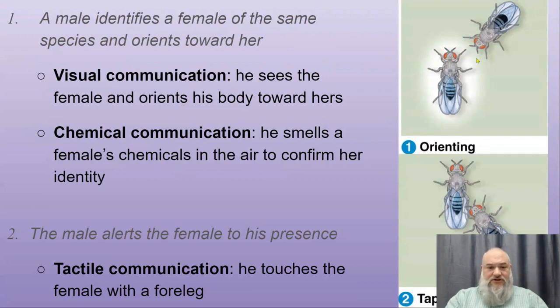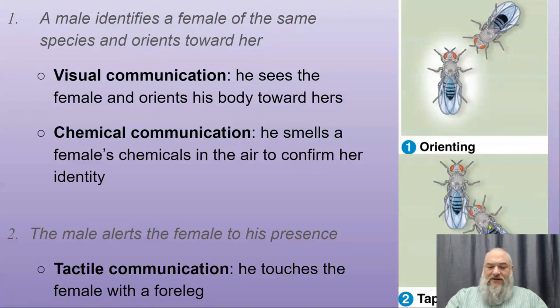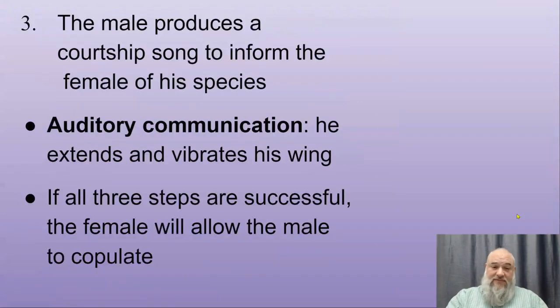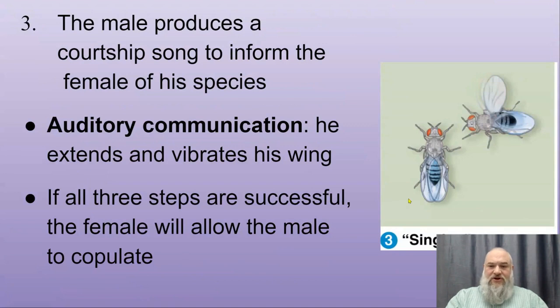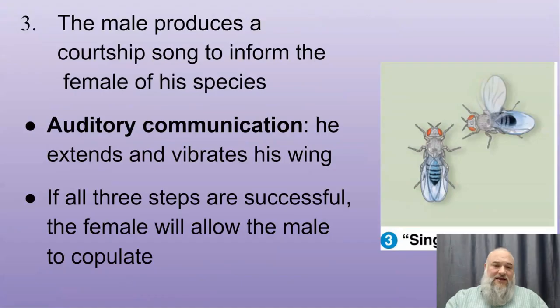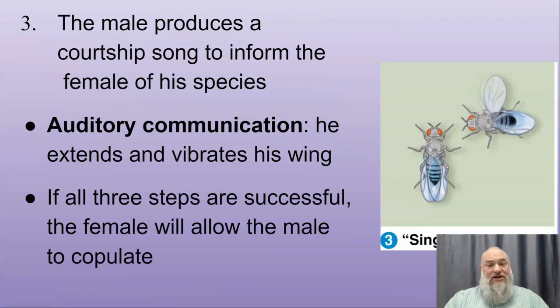With fruit flies, the male sees the female and looks toward her. He then smells her chemical signals to confirm she's the right species. He touches her, then produces an auditory signal by wiggling one wing to make a mating song. The female can then recognize him as the same species and mating may proceed. You need all those steps — it's a stimulus chain or sign chain.